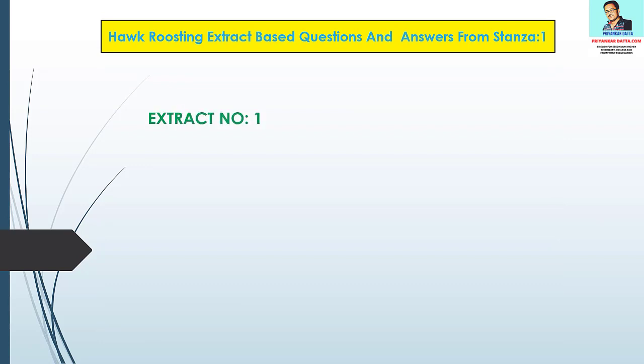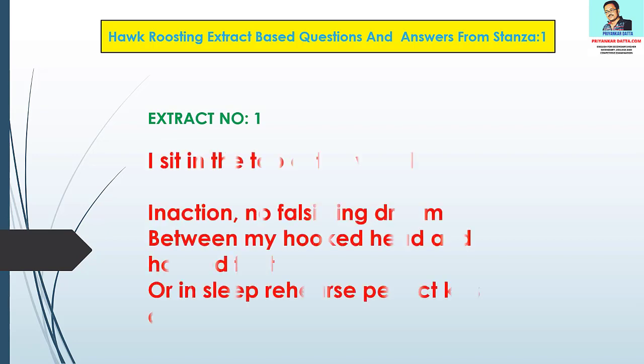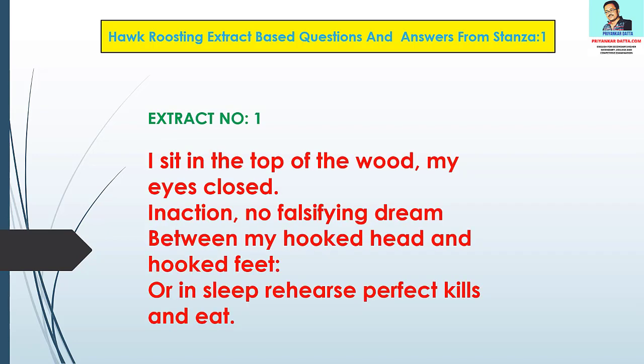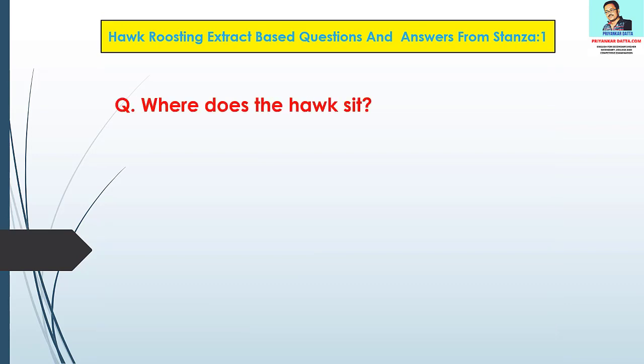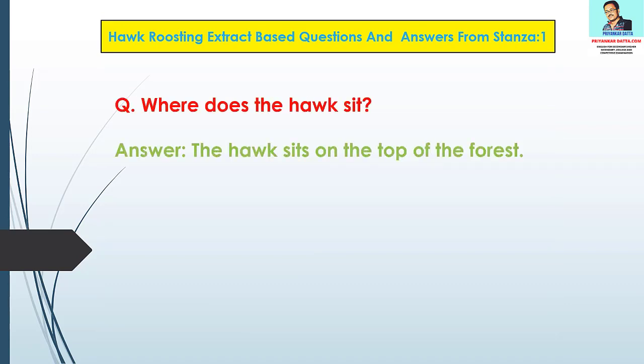Hawk Roosting extract based questions and answers from Stanza 1. Extract number one: 'I sit in the top of the wood, my eyes closed, in action. No falsifying dream between my hooked head and hooked feet.' Question 1: Where does the hawk sit? Answer: The hawk sits on the top of the forest.